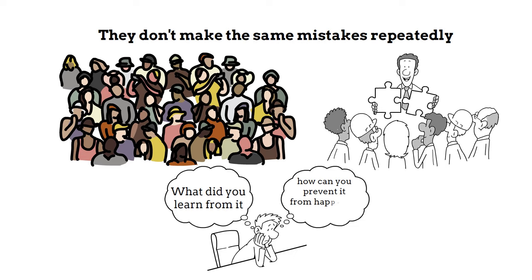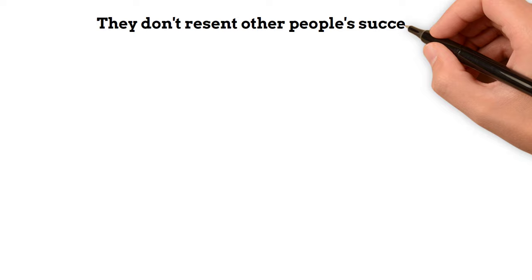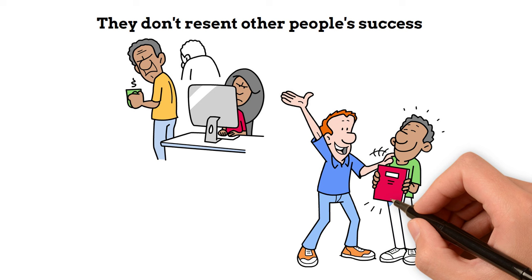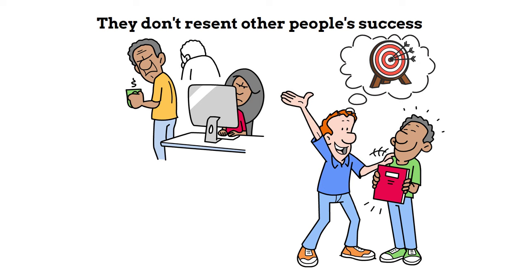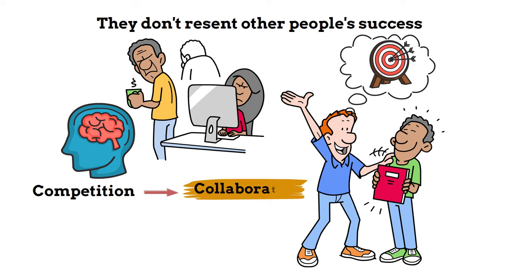Seven: They don't resent other people's success. Instead of feeling envious or resentful towards others, mentally strong people celebrate their achievements and use them as inspiration for their goals. Consider how you can shift your mindset from competition to collaboration in your personal and professional life.